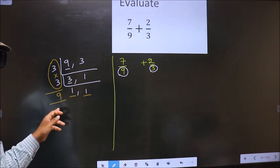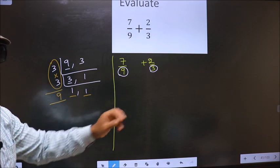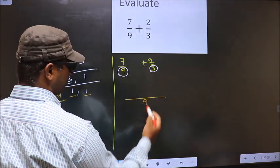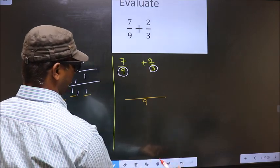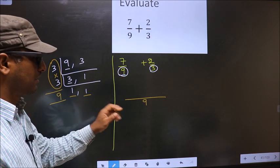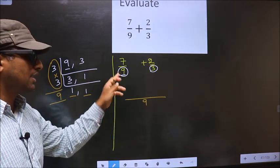Once you got the LCM we should write the LCM here in this way, that is by 9. Now here the denominator is 9. Here also you have 9. These two are same.